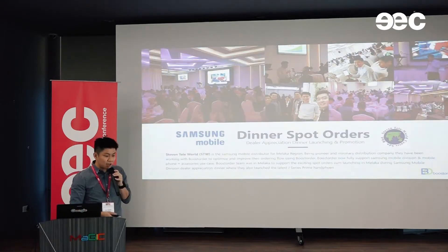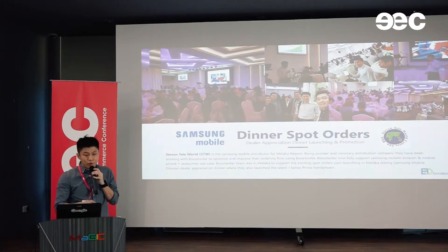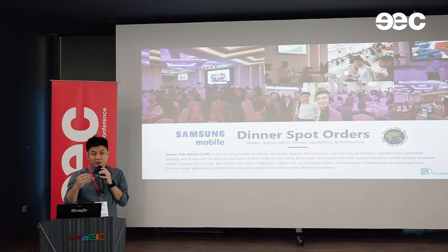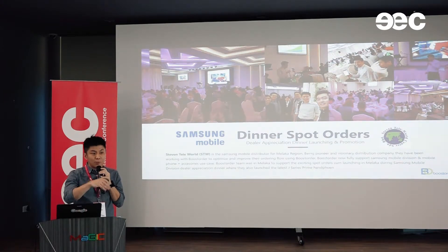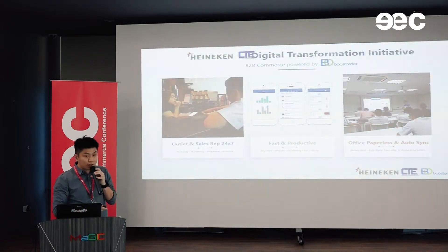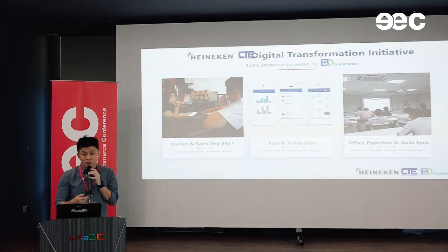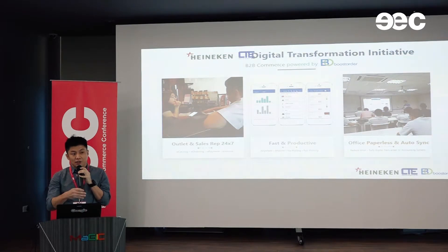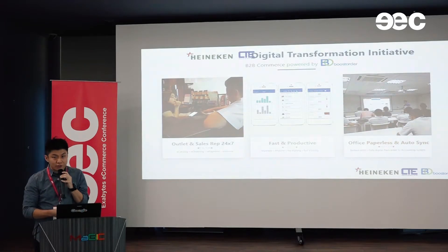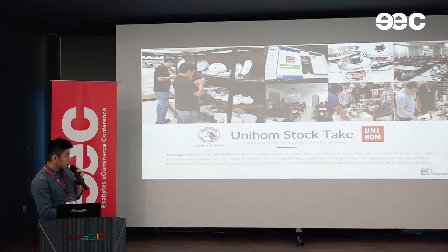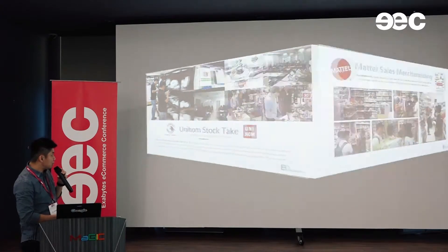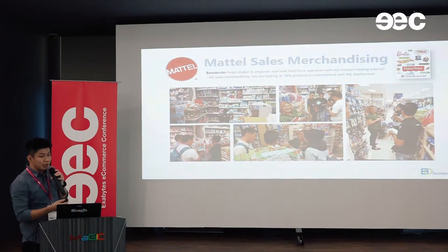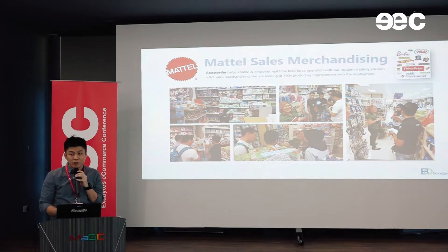To explain how we help customers: companies like Samsung — their distributors now deploy our systems for retailers, so people who open a shop in Lowyat, for example, now just use an app to order from their distributors. Similarly, Heineken operates the same model — we work with their distributors so that small mom-and-pop convenience stores and pubs can place orders 24/7. Companies like Kitchenverse and toy companies like Mattel are also using the system to empower their modern trading operations.